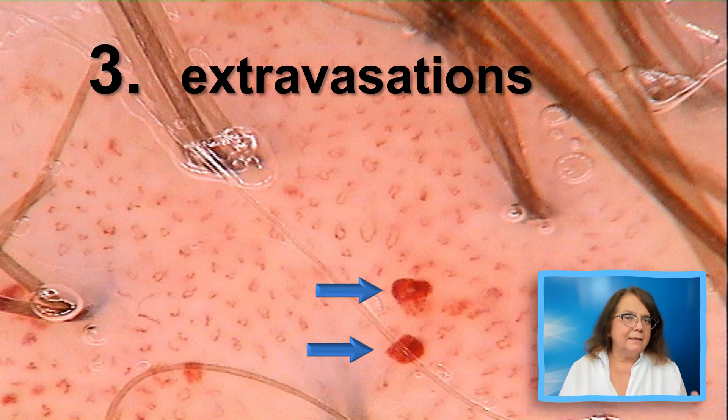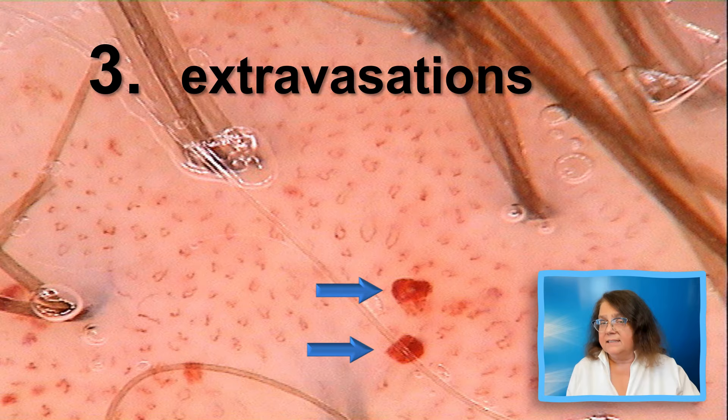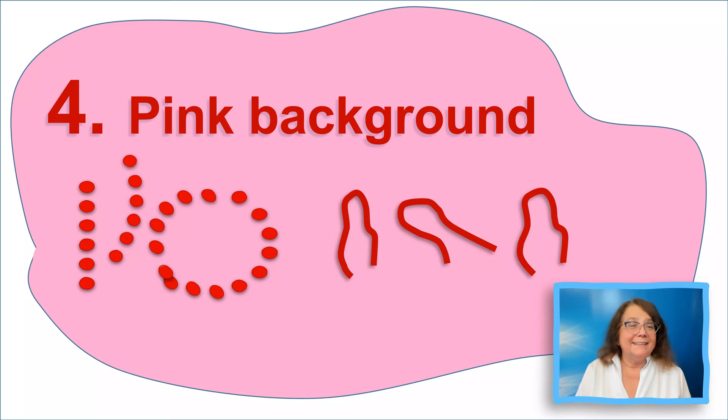Number three: the extravasations. It seems that the extravasations, similar to the splinter hemorrhages in the nails, are a feature of high disease activity. They may develop spontaneously or by scratching or other types of mechanical injury, just as it happens with the Auspitz sign.